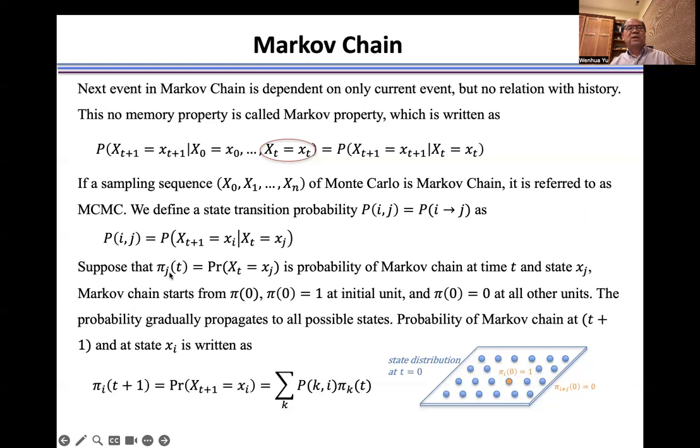Markov chain starts from π(0), that is t = 0, meaning πi(0) = 1 at initial unit, and π(0) = 0 at all other units. That means we randomly pick up one state as the initial point.